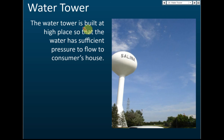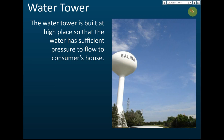A water tower is built at a high place so that the water has sufficient pressure to flow to consumers' houses. The tank is placed at a high elevation, preferably on a hilltop. If the location is not naturally elevated, a stand is used to support the tank at height in order to increase the water pressure. A pump is also needed to pump the water up into the elevated tank.